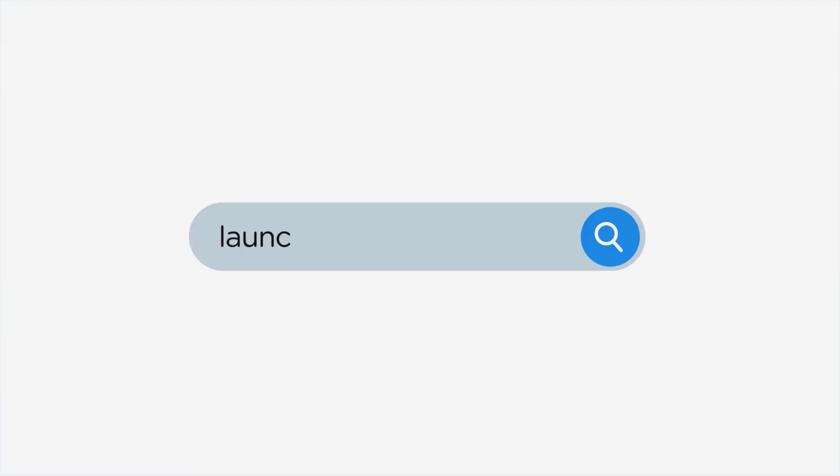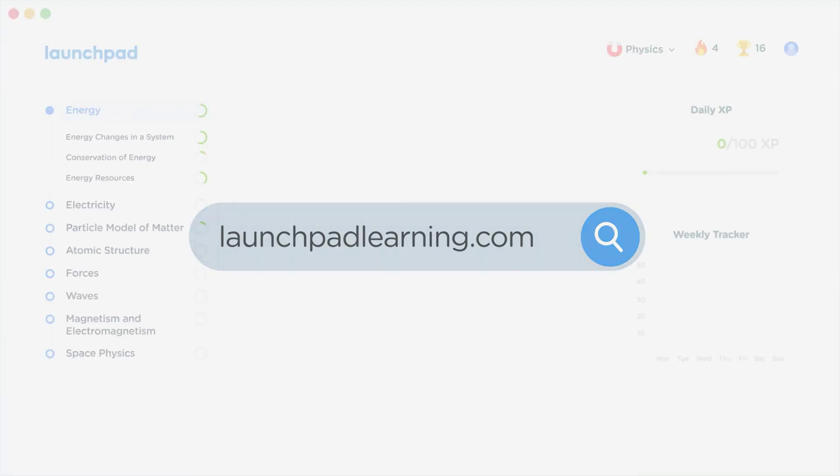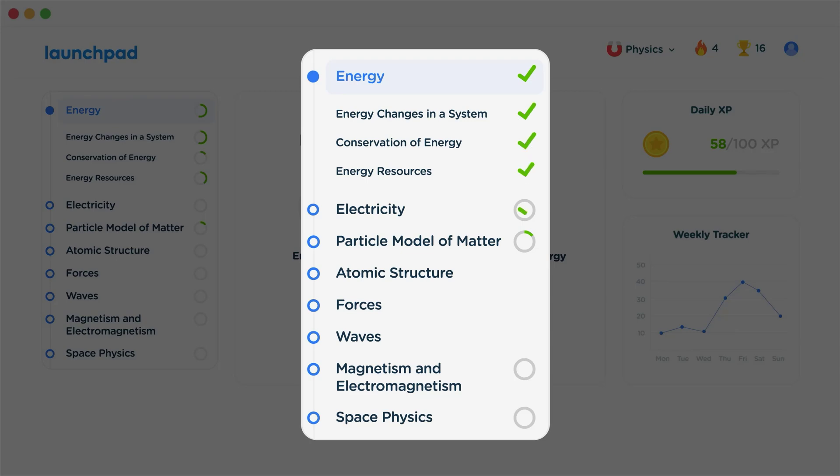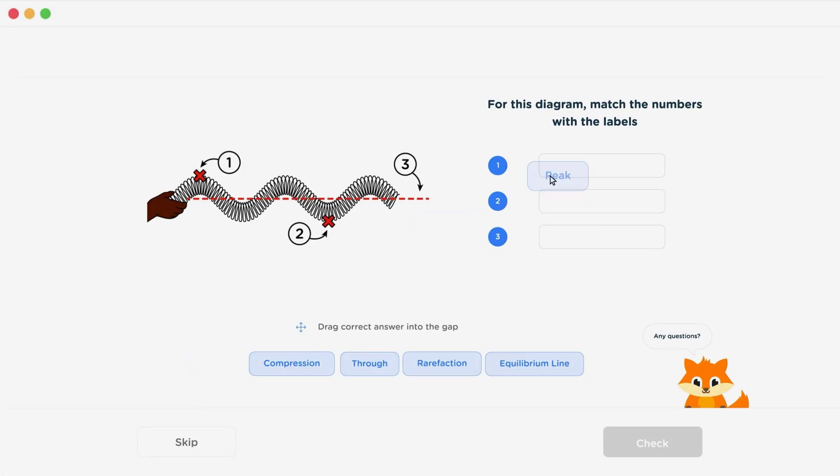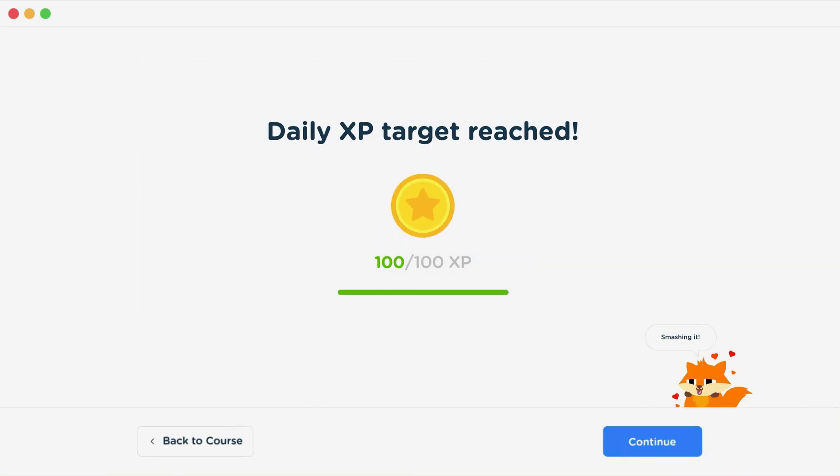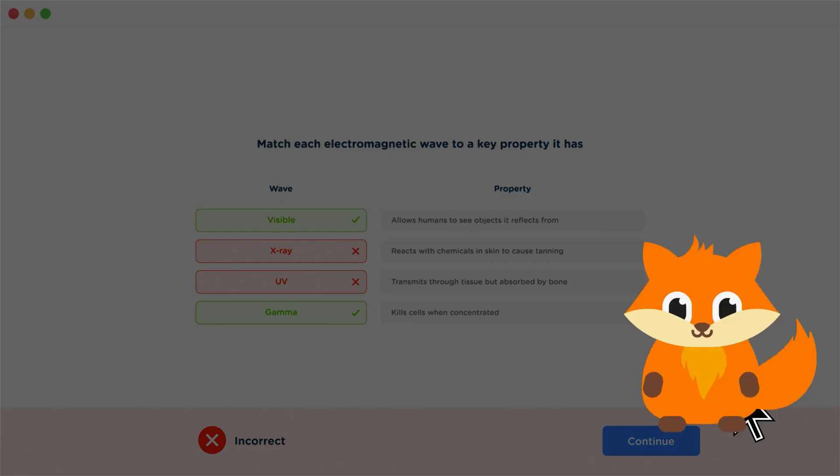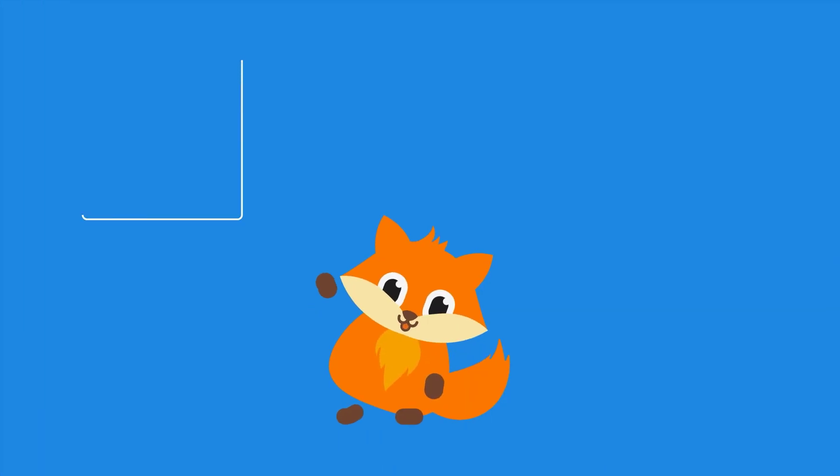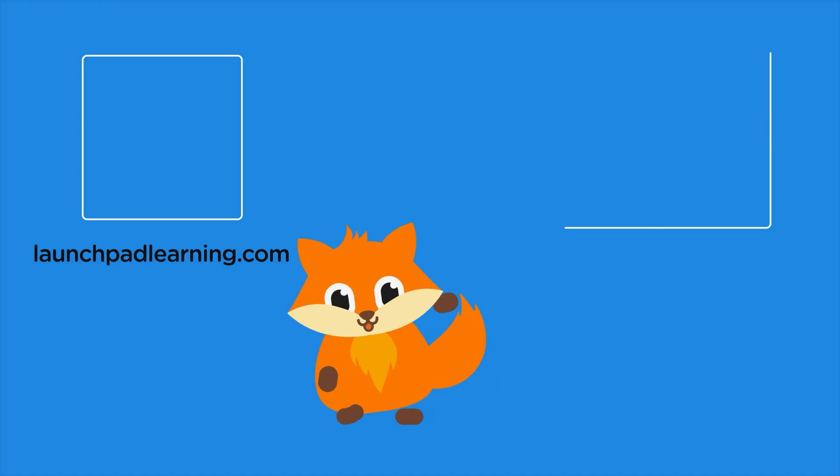Head over to Launchpadlearning.com and check out our smart learning platform that's been designed to get you top results in your exams. We cover your whole specification and make revision fun, with interactive quizzes, easy-to-follow videos, and more. You'll be kept motivated by your own AI tutor, who's here to support you every step of the way. To check it out for yourself, click here. Or click here to keep watching a selection of the videos from our full GCSE Physics course. See you there!